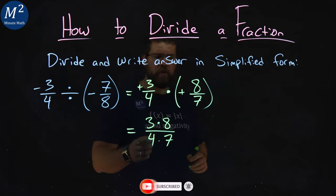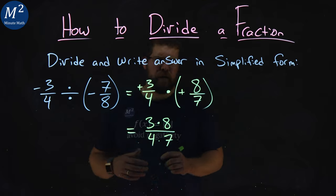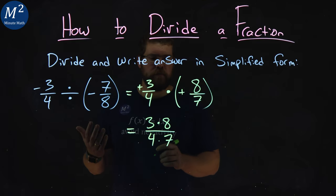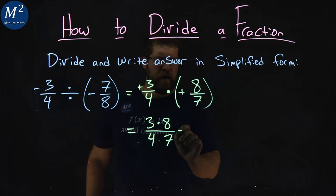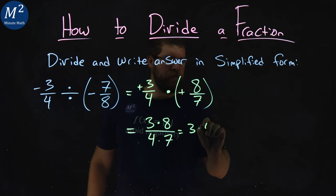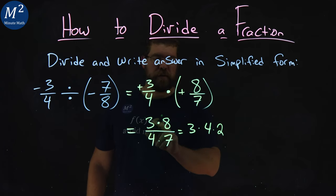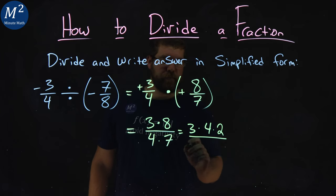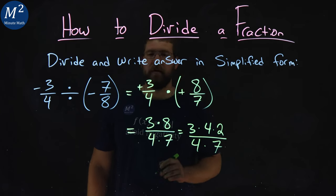Hmm, now I think four goes into eight, right? I have a common factor of four. Eight can be written as four times two. So instead of three times eight, I have three times four times two, and I have four times seven in the denominator.